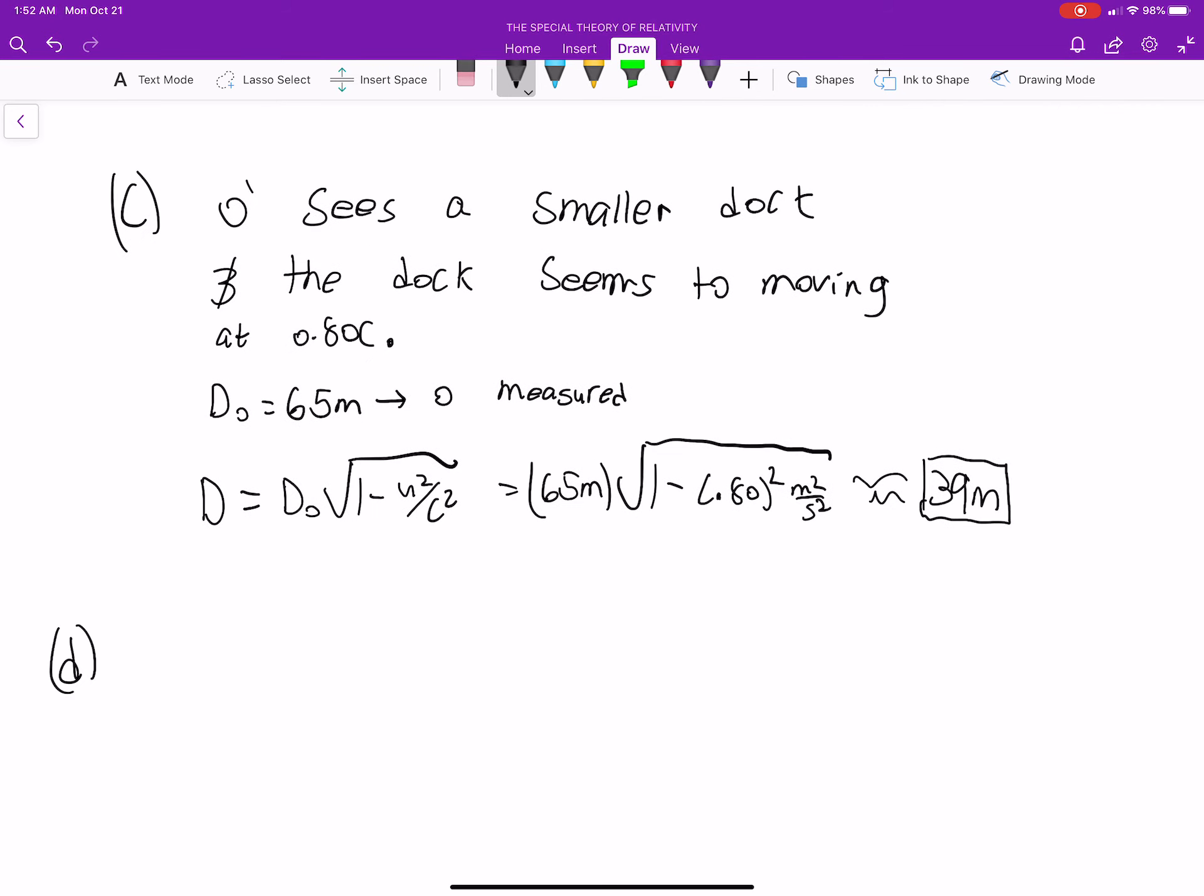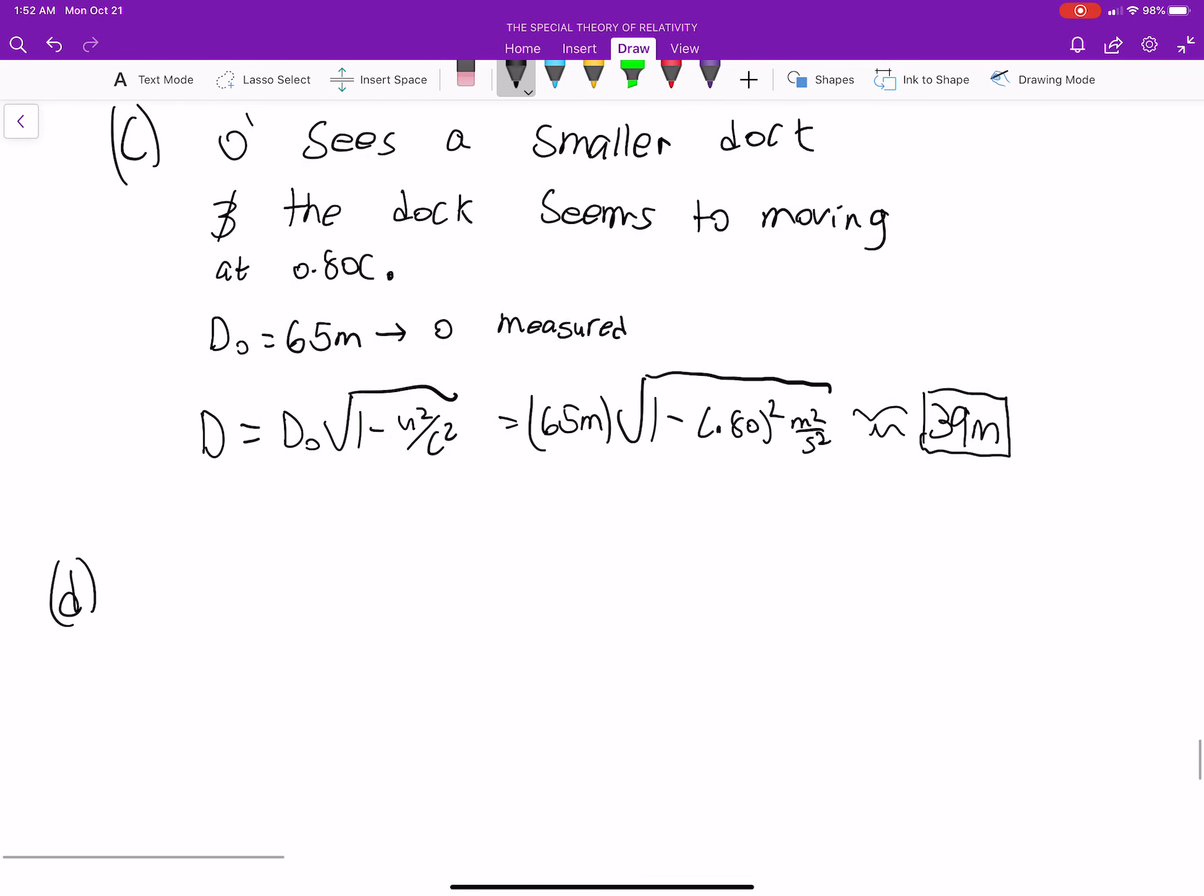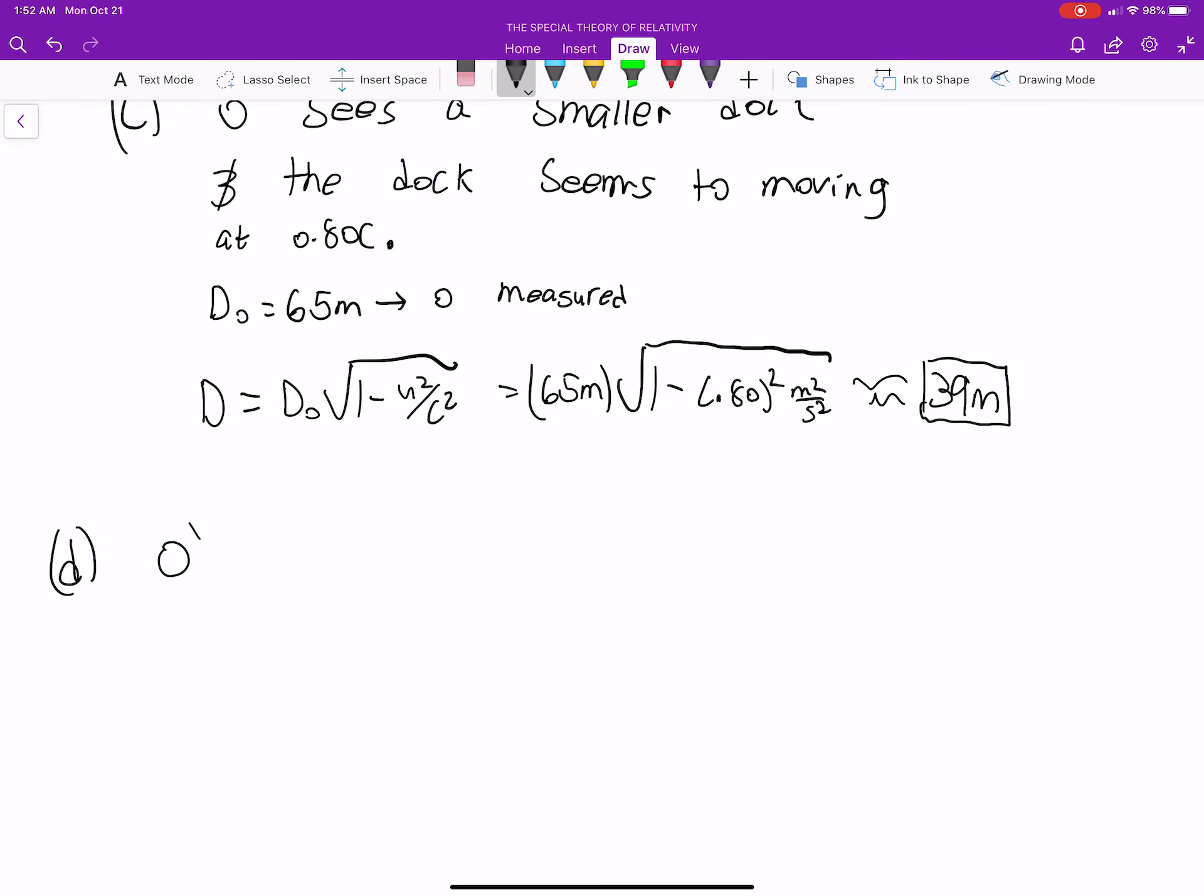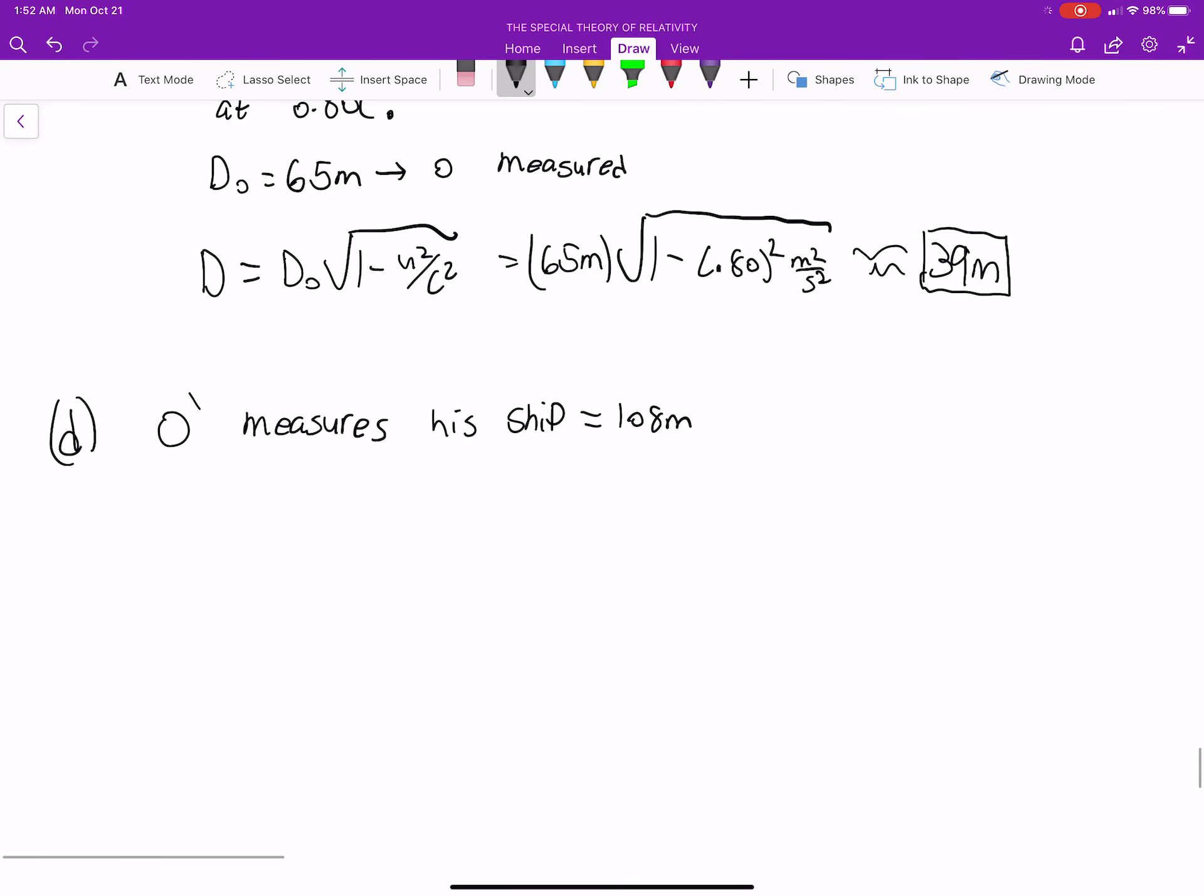Let's move on to D. According to O-prime, how long does it take for the observer O to pass the entire length of the rocket? Okay. So let's start by noting that O-prime measures his ship is equal to 108 meters. That was our proper length. So from O-prime's point of view, the proper length is the size of the ship. Well, what we'll call delta T-prime is equal to 108 meters divided by the speed. Which, if you plug this in, you get 0.45 microseconds.